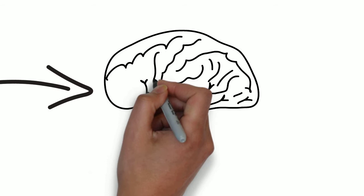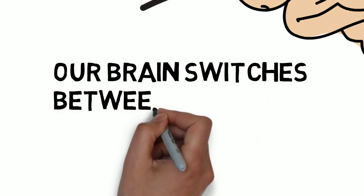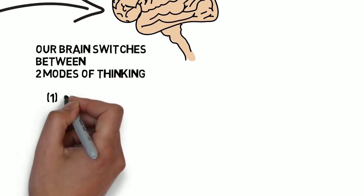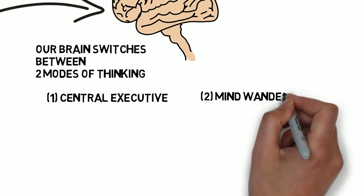Our brain has some limitations and doesn't necessarily operate in a perfect way. What our brain does is it switches between two modes of thinking. These are called the central executive system and the mind-wandering system.